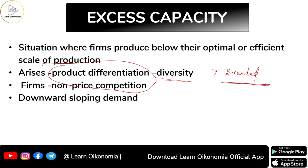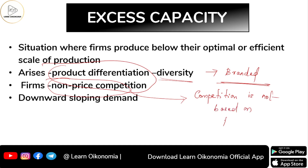For this reason, firms in a monopolistically competitive market structure mostly follow non-price competition — the competition is not based on prices but on other elements. As a result, you have a downward sloping demand curve, with quantity along the x-axis and price along the y-axis.